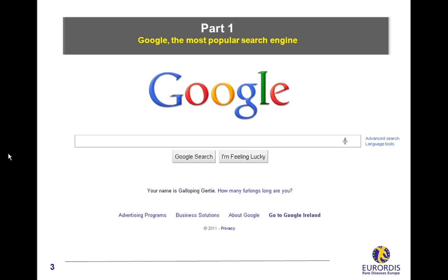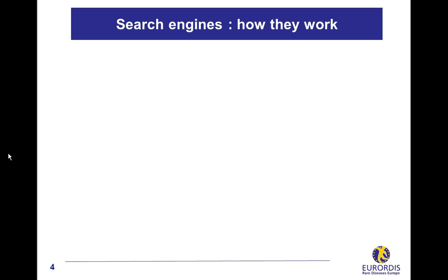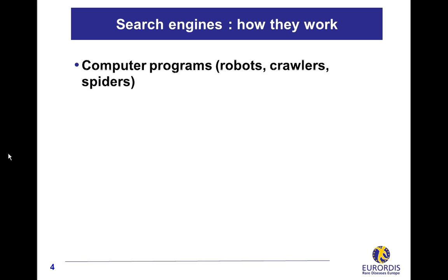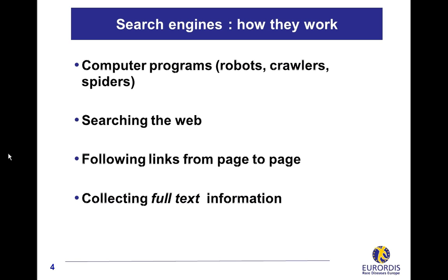Search engines work by sending computer programs, also known as robots, crawlers, or spiders, to search the web. Robots follow links from page to page, collect the full-text information from all websites, and store this information in a database.